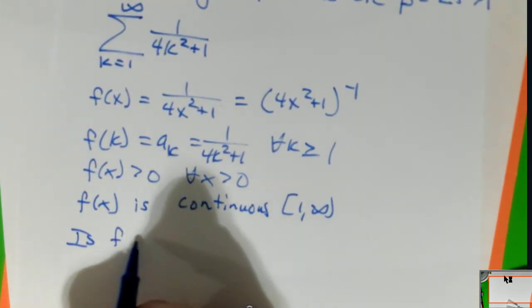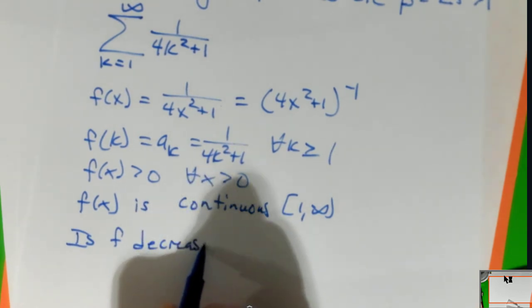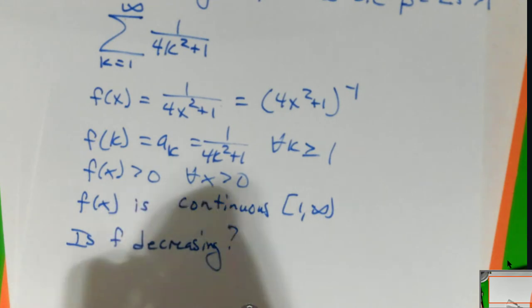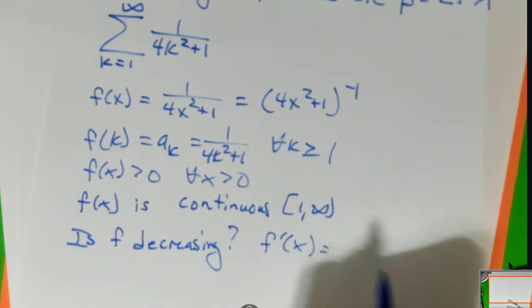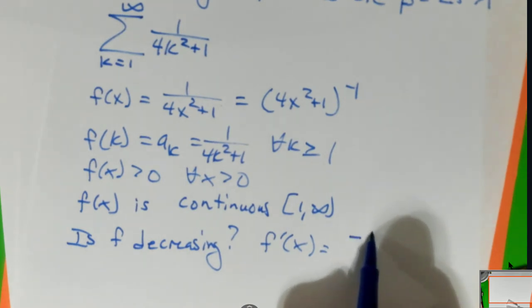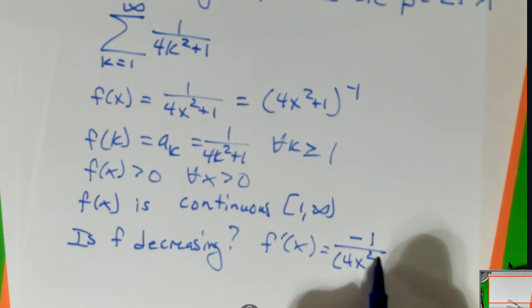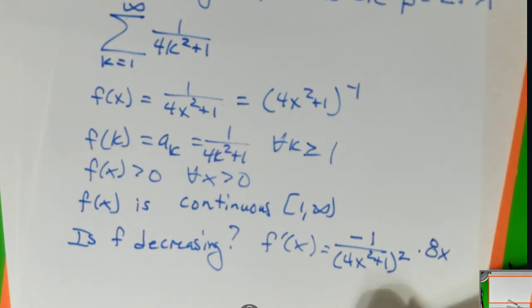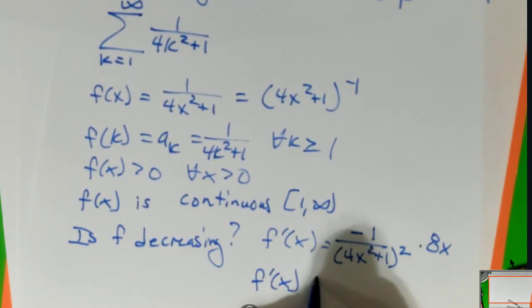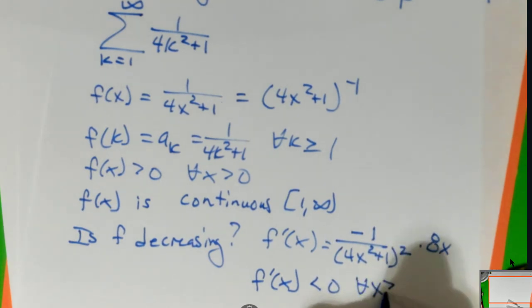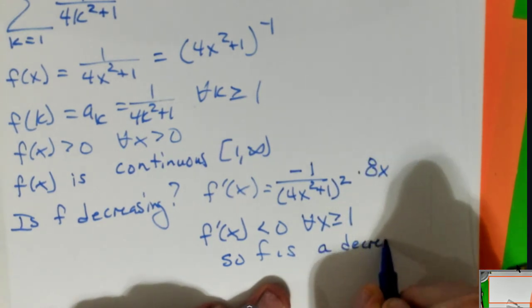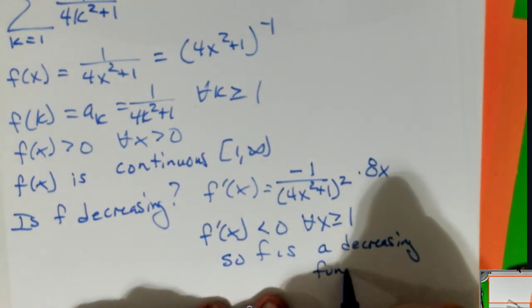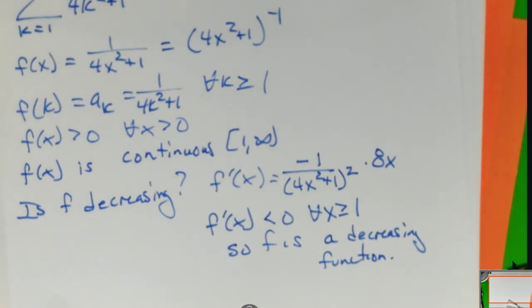Now, notice I'm just going to go from one to infinity. Is f decreasing? f prime of x will be minus one over four x squared plus one to the minus two, which is over two, times eight x. Clearly, f prime of x is negative for all x bigger than or equal to one. So f is a decreasing function.